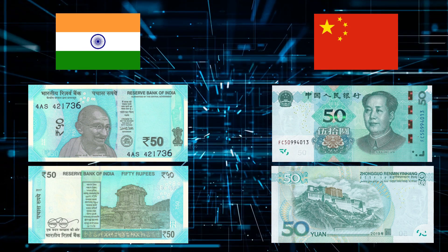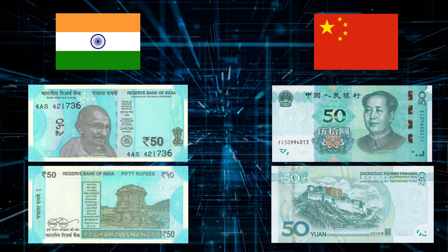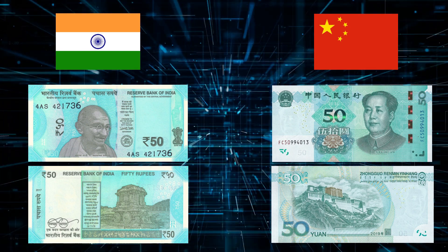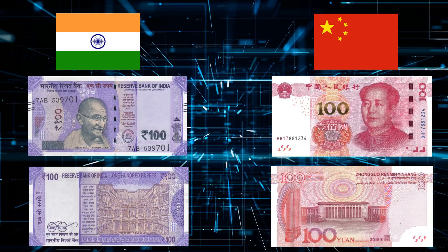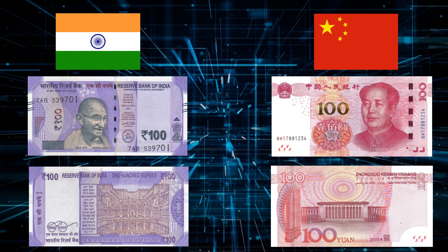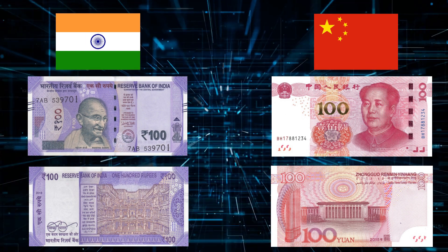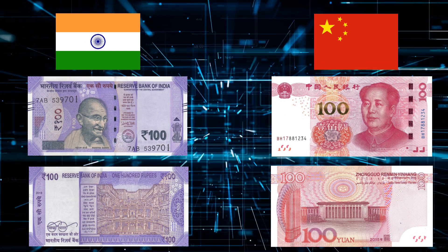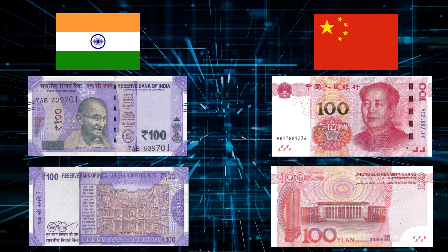Next are India's 50 Rupees and China's 50 Yuan notes. And on the screen, India's 100 Rupees and China's 100 Yuan notes on the front side and back side. On Indian currency notes on the front side, there is Mahatma Gandhi Ji's photo. And on China's Yuan notes, there is Mao Zedong's photo, who was the founder of China.